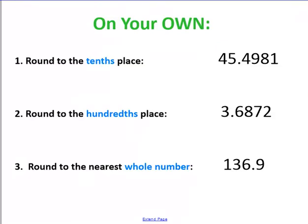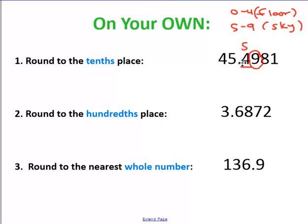Let's try some practice. Here we're going to round to the tenths place. Locate your number — here's the tenths place. Look to your right. This is a nine, so five through nine tells me that this four has to go up to a five and everything else goes away. The answer is 45.5, or 45 and five tenths. Next, rounding to the hundredths place: locate your number — tenths, hundredths. Look to the right — this is a five through nine, so we're going to go up one. This eight needs to go up to a nine and everything else gets crossed out. So three and sixty-nine hundredths.